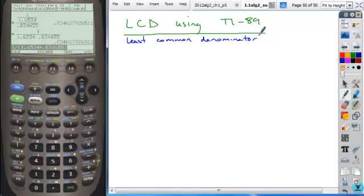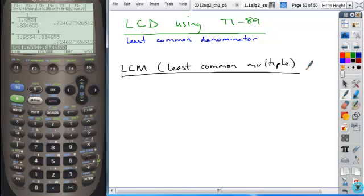So what I want to do is talk through if you're given a problem where you're asked to find the least common denominator between a certain set of fractions, how would you go about using your calculator to do that? The calculator doesn't have specifically an LCD button, but it does have an LCM.